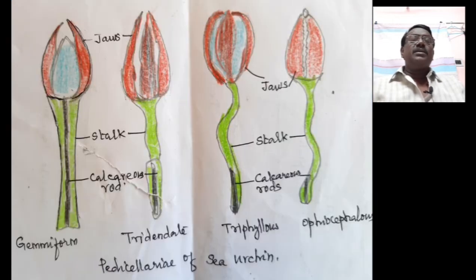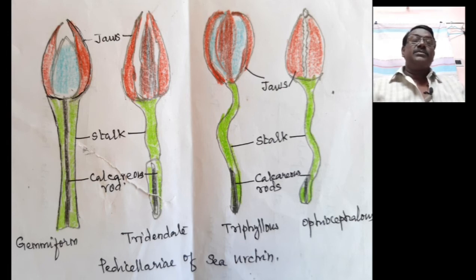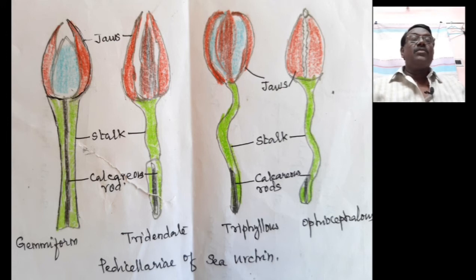This illustration shows the pedicellaria found in the sea urchin, belonging to the class Echinoidea. Four types of pedicellaria are found in the sea urchin: gemmiform, tridentate, triphyllous, and ophiocephalous.